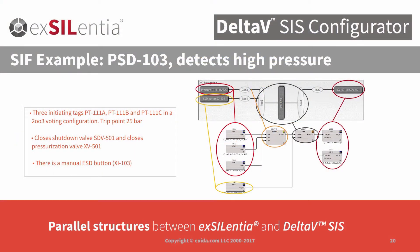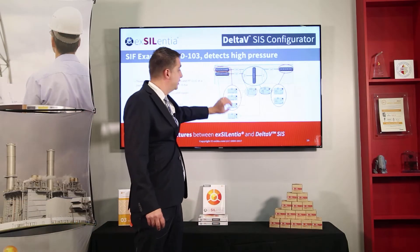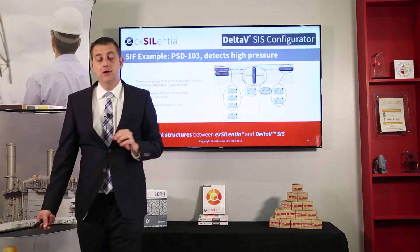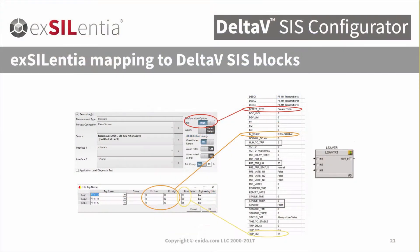We see a single discrete input that goes directly into the Delta V SIS CEM block. Both of these go into the CEM block, which can be configured to trip if either one indicates a trip — a one-of-two vote between the groups. It then drives two outputs. It's very straightforward how this configuration relates to the logic we generate in Delta V SIS.